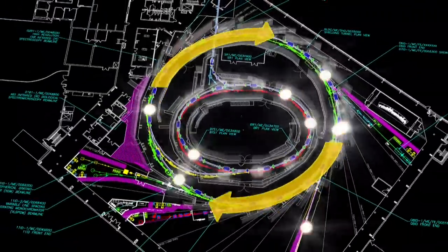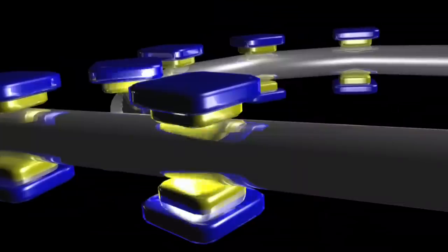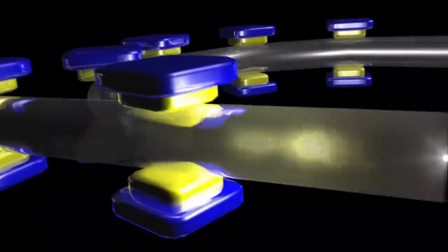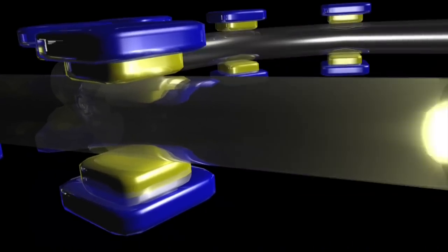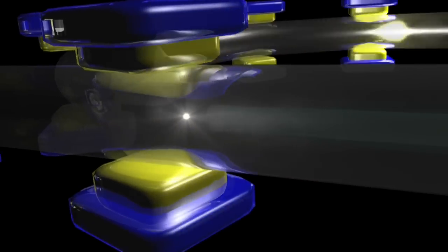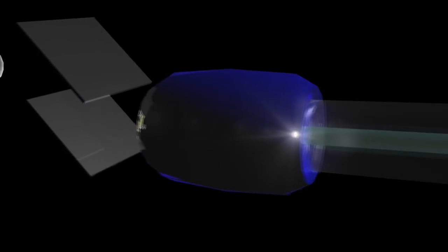The electron beam is then injected into the synchrotron storage ring. When the path of these high-speed, high-energy electrons is bent by magnets inside the storage ring, a natural phenomenon occurs to produce an extremely brilliant light.